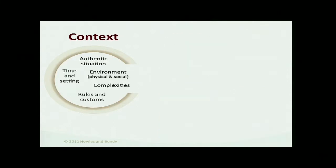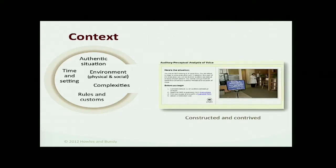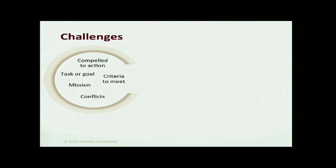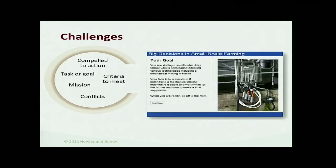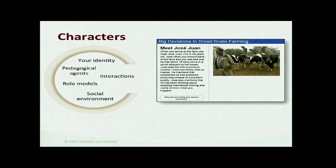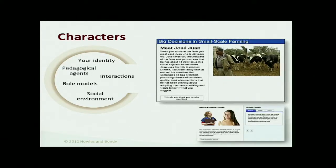The first C is content: are you teaching concepts, facts, principles, procedures? Through that, the student is going to gain knowledge and experience. Context — we want it to be authentic; we want rules, customs, and the environment to play into what they're doing. The challenge — is it a task, a goal, a mission? What is the criteria the student has to meet? Then there's a variety of characters, pedagogical agents, things that move the student forward.